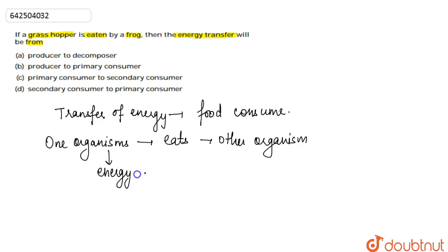The energy will be obtained by the predator, and not by the prey. The predator is basically the organism that feeds on another organism, while the prey is the one on whom the predator feeds.